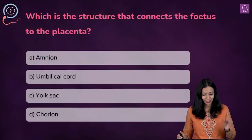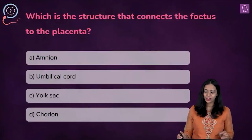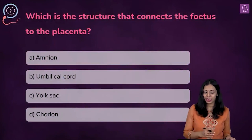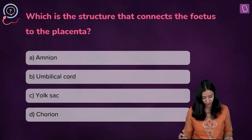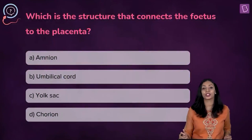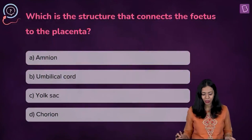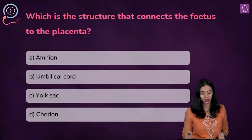Here's the question: which is the structure that connects the fetus to the placenta? In the options we have amnion, umbilical cord, yolk sac, and the chorion.